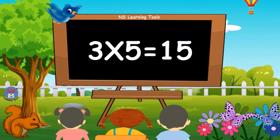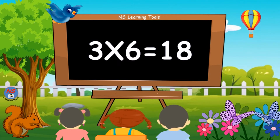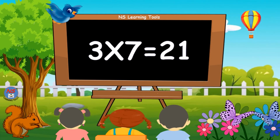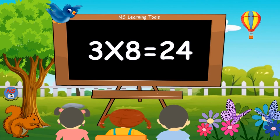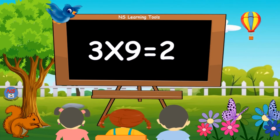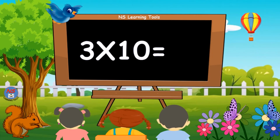Three 6s are 18. Three 7s are 21. Three 8s are 24. Three 9s are 27. Three 10s are 30.